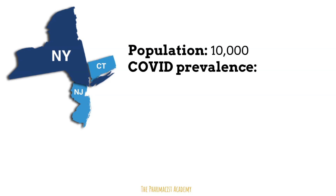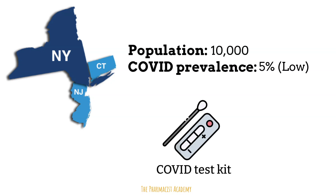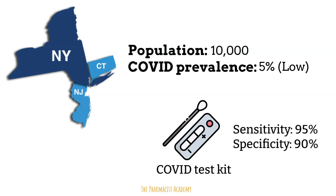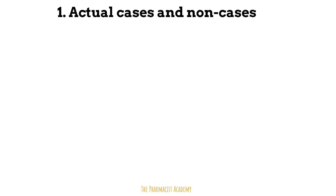The combined population is 10,000 with a 5% COVID prevalence, which we will categorize as low. Here is the sensitivity and specificity of the COVID test. Based on the information given, we will follow some steps that will ultimately help us calculate the PPV and NPV. First, let's determine how many actual cases and non-cases there are.